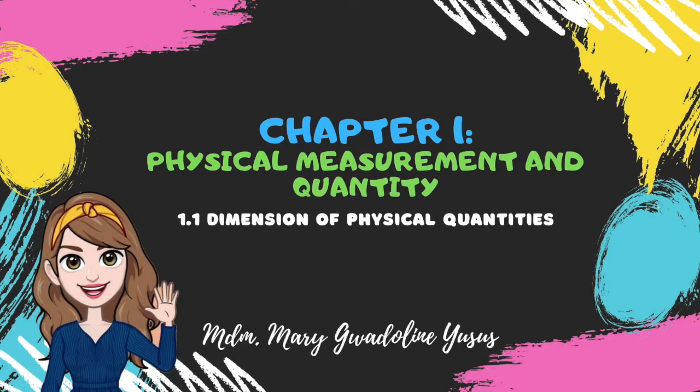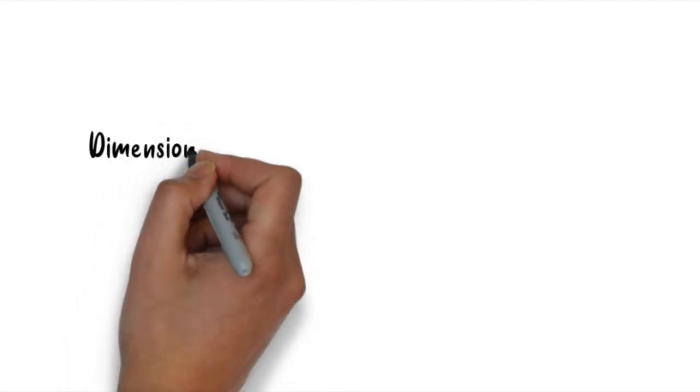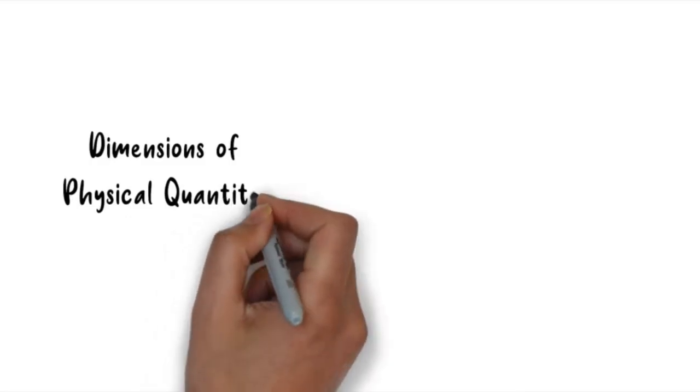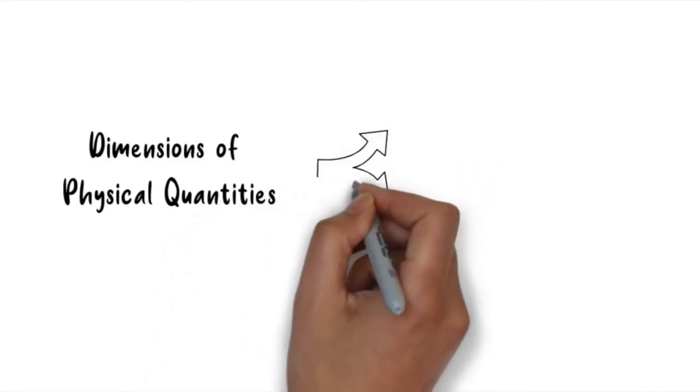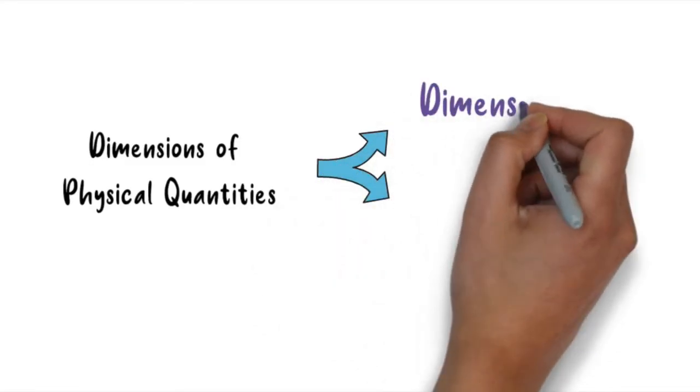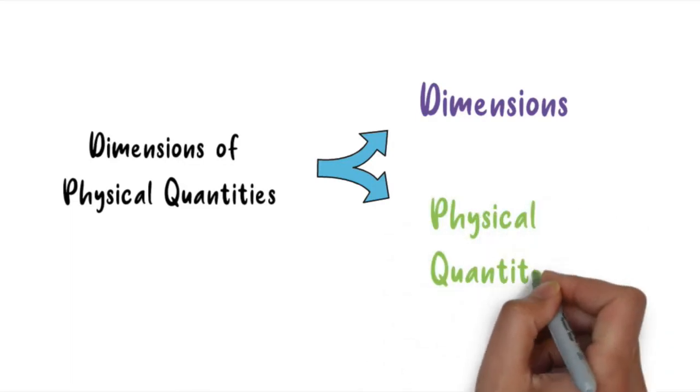The first subtopic is dimension of physical quantities. So from the subtopic itself that is dimension of physical quantities, there are two keywords that you need to understand. The first keyword is dimension. Second one is physical quantities.